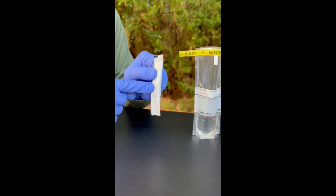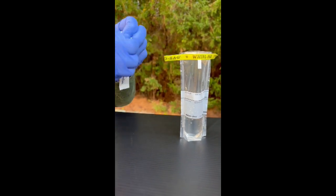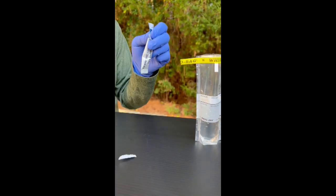Open the E. coli growth medium packet and pour the powder medium into the Thio Bag.